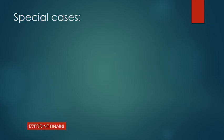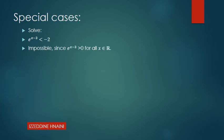Special cases: solve e^(x-3) < -2. We know that the exponential function is always positive, so this exponential function cannot be less than -2. Therefore there is no solution — it is impossible, since the exponential is always positive.